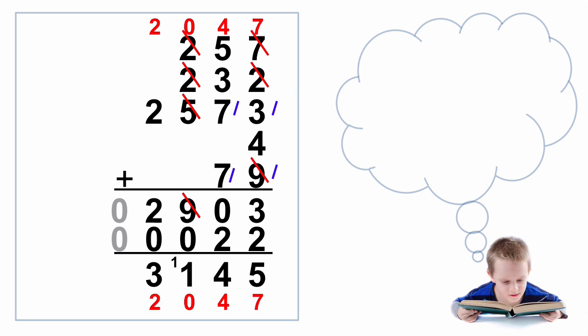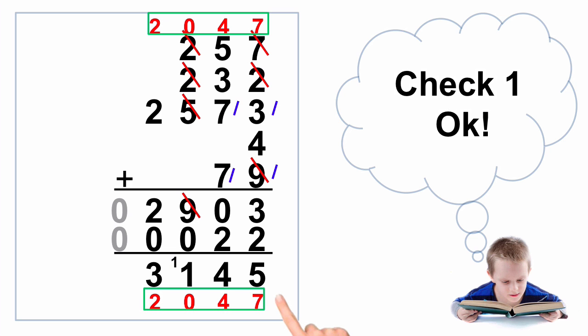Now we can check the two sets of digit roots. The first one's 2, 0, 4, 7. The next one's 2, 0, 4, 7. They match. The first check's OK. So that's our first check.